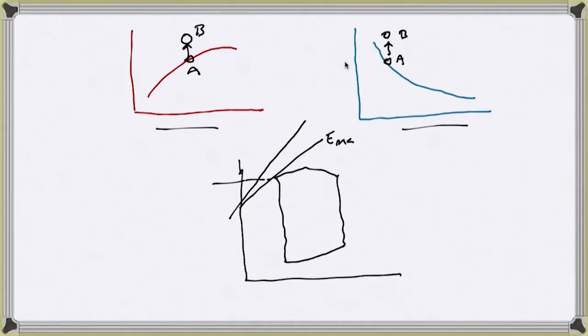So then, even though preload is staying the same and afterload is staying the same, you can eject to this smaller end systolic volume. So you're going to increase your stroke volume because you've increased the contractile state here.